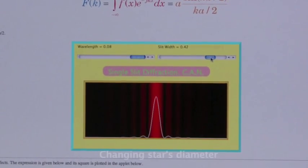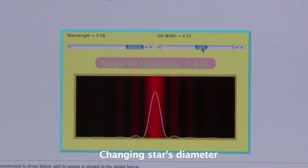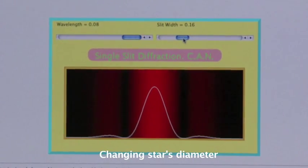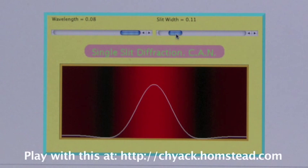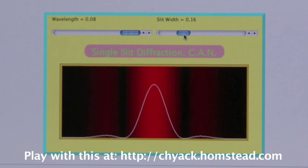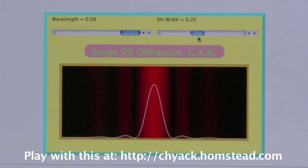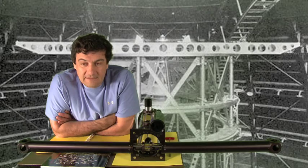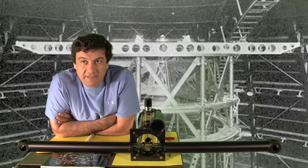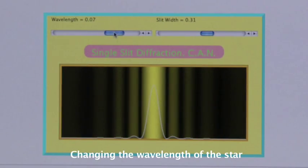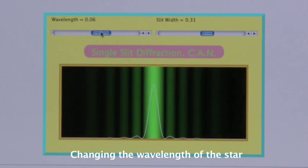In the Fourier domain, you would have basically a sinc function. It relates to the distance of the stars, the wavelength, and the diameter of the stars. So having the wavelength and the distance of the star, one can determine the star diameter.